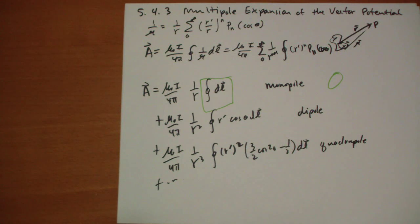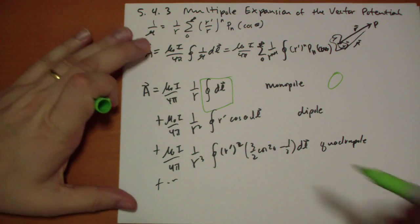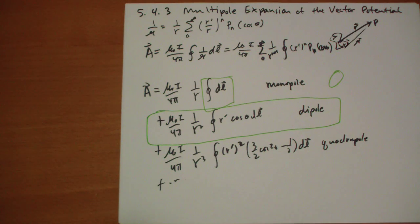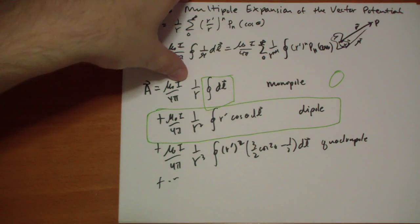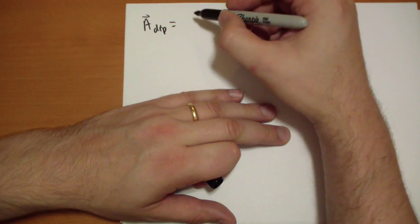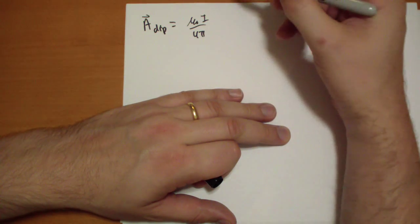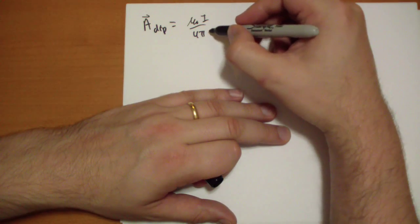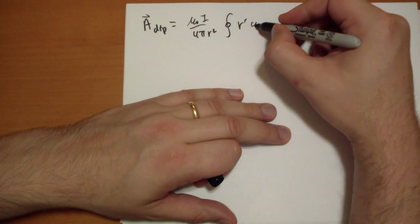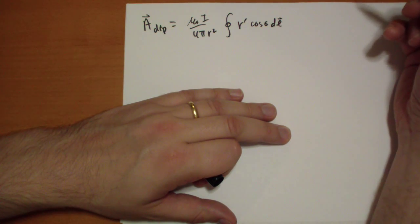This is the term that everybody pays attention to. It's also, compared to electrostatics, deceptively more simpler than the electrostatic dipole term. So let's take a look more at what that looks like. Okay, so the dipole term of the A vector is equal to μ₀i over 4π r squared, the closed loop integral of r prime times cosine theta dl vector.